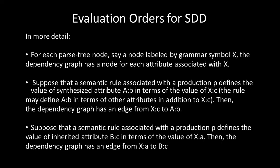For each parse tree node labeled by grammar symbol X, the dependency graph has a node for each attribute associated with X. Suppose the semantic rule associated with production p defines the value of synthesized attribute A.b in terms of the value of X.c. The rule defines A produces X, so the dependency graph has an edge from X to A — meaning we first calculate the value of X and pass it to A.